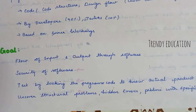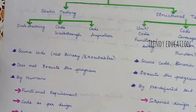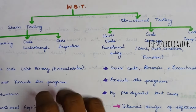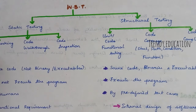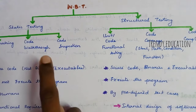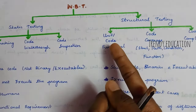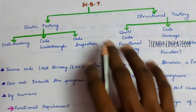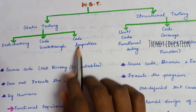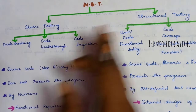In white box testing, there are two types: static testing and structural testing. Static testing has two methods: human review and analysis tools. Under static testing we do test checking, code walkthrough, and code inspection.